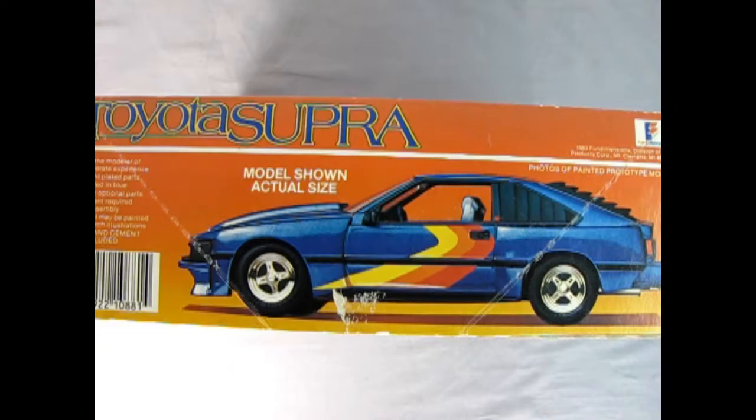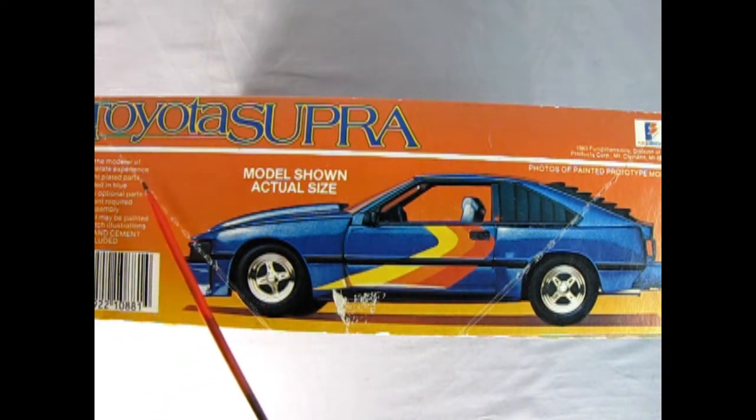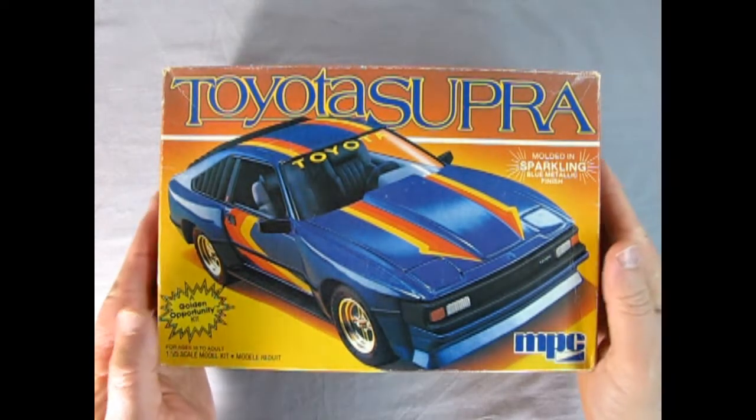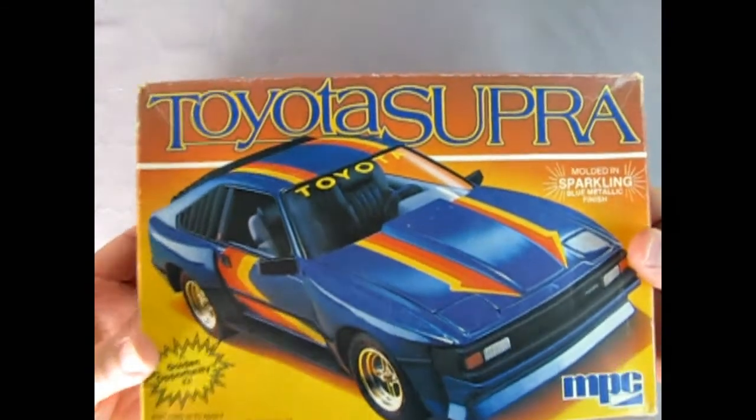On this side of the box, we get a showing of the model and the actual size. It says for the modeler of moderate experience, bright plated parts, molded in blue, many optional parts, cement required for assembly, model may be painted to match the illustrations, and paint and cement is not included. This is also a fun dimensions kit which came out in '83. Now let's take the lid off this model kit and see what we have inside.